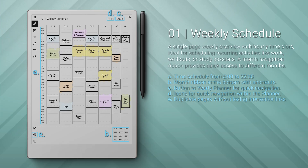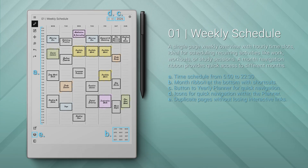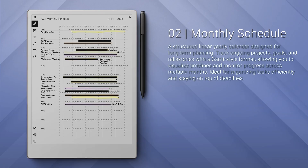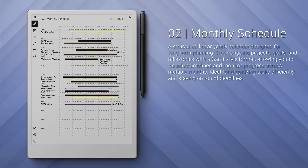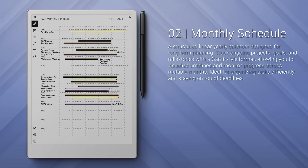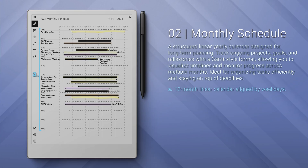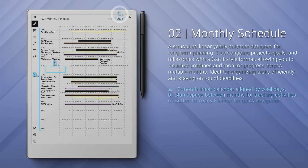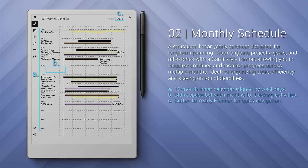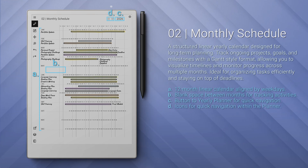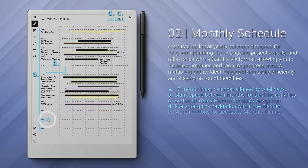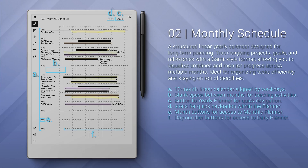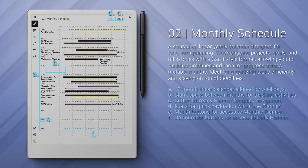Number two: the monthly schedule — a linear yearly calendar for long-term planning to track projects, goals, and milestones. It comprises a 12-month linear calendar aligned by weekdays, blank space between months for tracking activities, a button to the yearly planner for quick navigation, icons for quick navigation within the planner, month buttons for access to the monthly planner, and day number buttons for access to the daily planner.